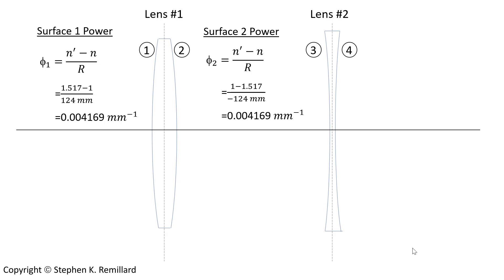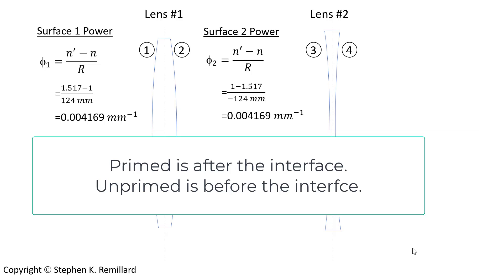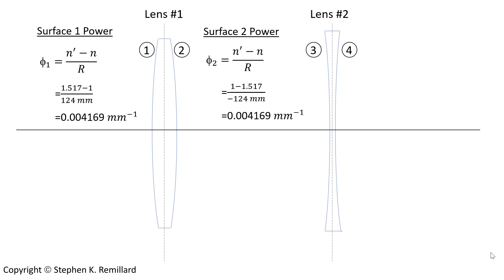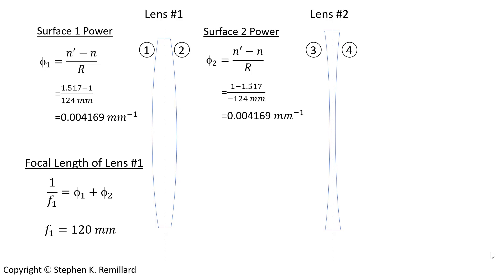The power of the second surface is found the same way, but the glass is first and then the air is next. Using n=1 for air and n=1.517 for glass — where n-prime refers to the index after the interface and n refers to the index before — the radius of curvature is also opposite in sign for surface 2 because it's concave. If the surface were convex, the radius is positive per our sign convention. The focal length of lens 1 is 1 over the sum of the powers, giving 120 millimeters.